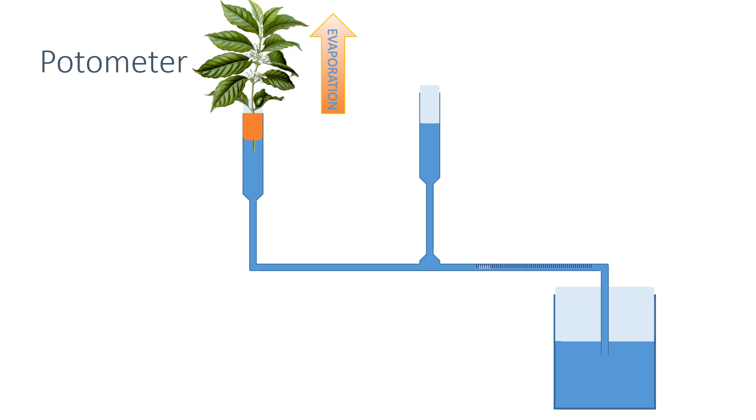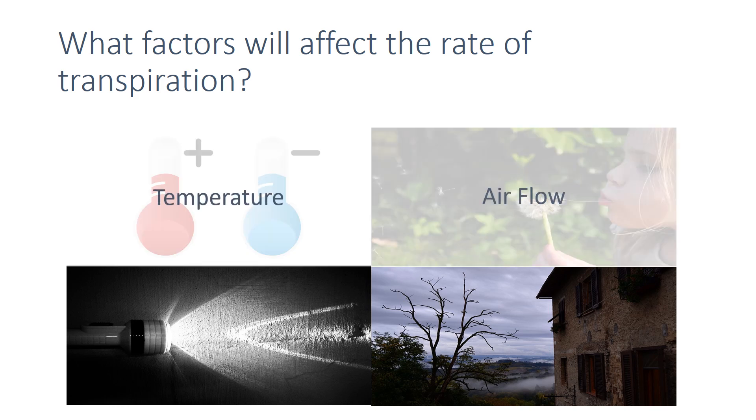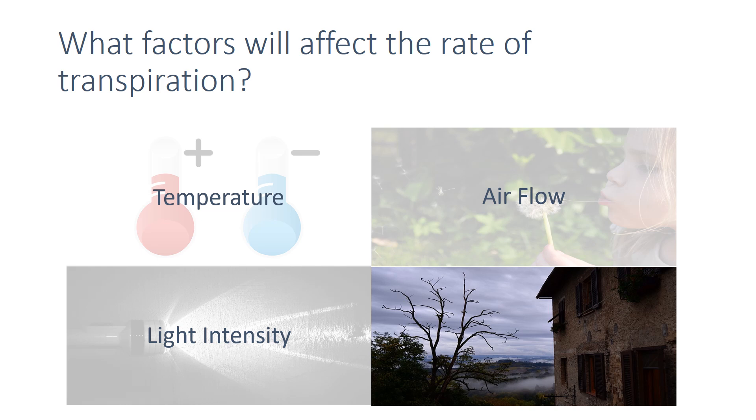Investigations using potometers have shown that there are a range of factors that can affect the rate of transpiration. Increasing the temperature, the airflow or the light intensity will increase the rate of transpiration, whilst decreasing the surrounding humidity will increase the rate.